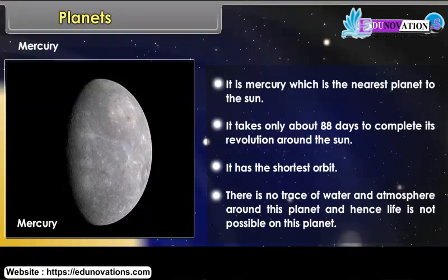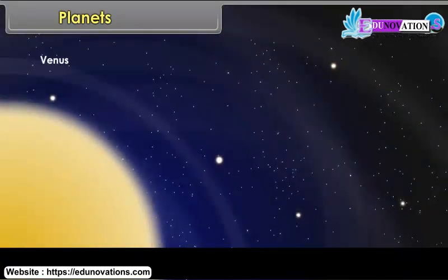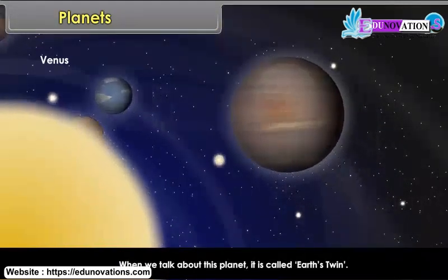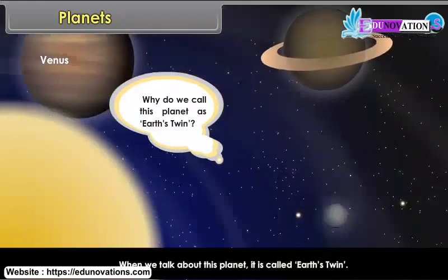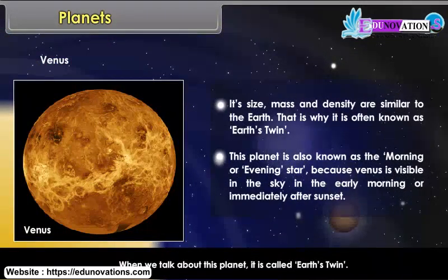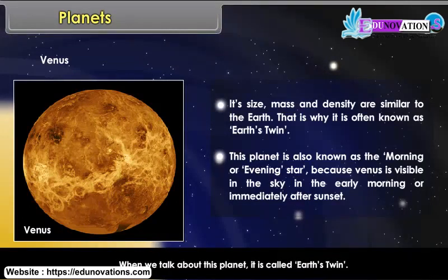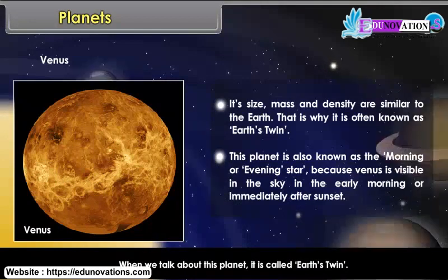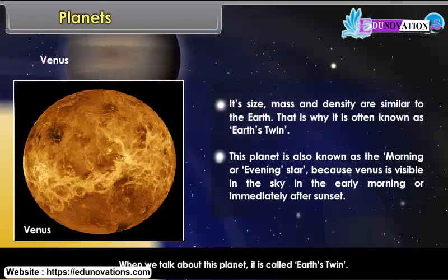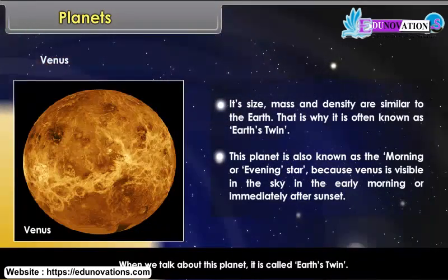Venus is called Earth's twin because its size, mass and density are similar to the Earth. This planet is also known as the morning or evening star because Venus is visible in the sky in the early morning or immediately after sunset.